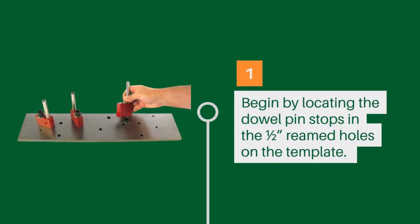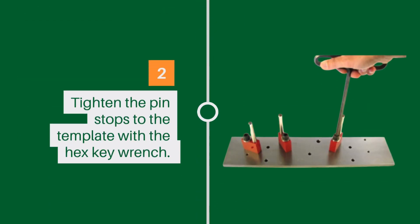Begin by locating the dowel pin stops in the one half inch reamed holes on the template. Tighten the pin stops to the template with the hex key wrench.